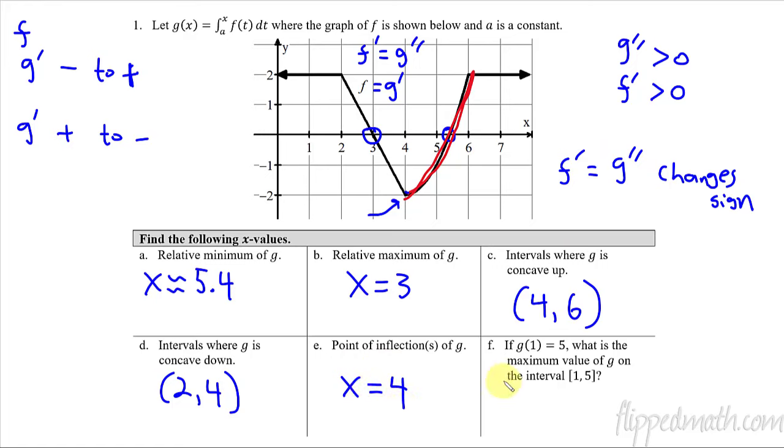And the last part of this problem is, what is the maximum value of g on this interval 1 to 5? If I go from 1 to 5, where does the maximum value occur? So this is all positive and it's gaining, and then here's our relative max. So we already figured out that this was a relative max. So I want to figure out right here what's the value. If I know that g of 1 equals 5, then I want to figure out at x equals 3. So at x equals 3, that's not the answer because I'm looking for a maximum value.